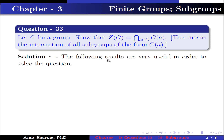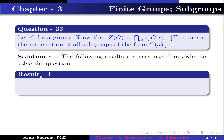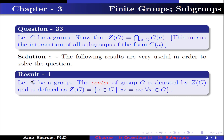The following results are very useful in order to solve the question. Result number 1: Let G be a group. The center of group G is denoted by Z(G) and is defined as Z(G) = { z ∈ G such that xz = zx for all x ∈ G }.